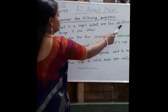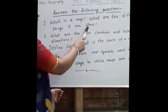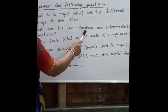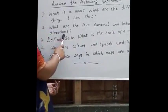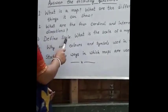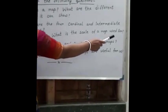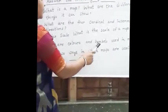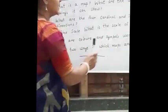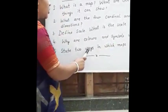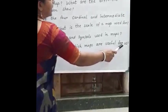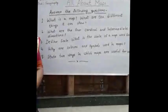What are the different things it can show? Number two, what are the four cardinal and intermediate directions? Number three, define scale. What is the scale of a map used for? Number four, why are colors and symbols used in maps? And number five, state two ways in which maps are useful for us. Students, this much for this chapter.